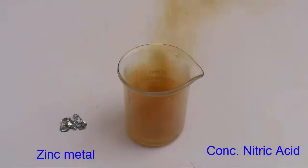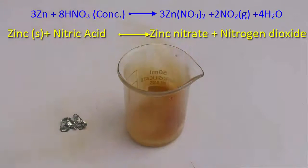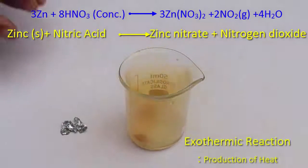A vigorous reaction will start immediately and brown fumes or gases will emit forth. The brown gas evolving from the beaker is nitrogen dioxide. The reaction is vigorous and exothermic which means that a lot of heat is produced.